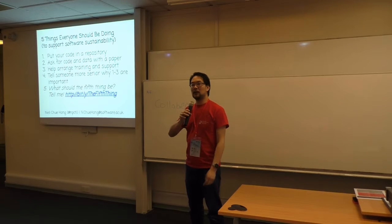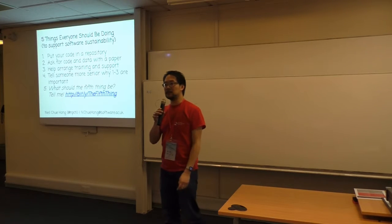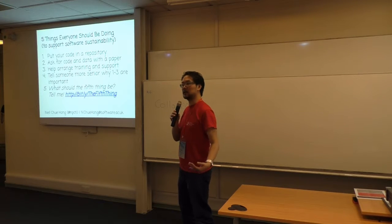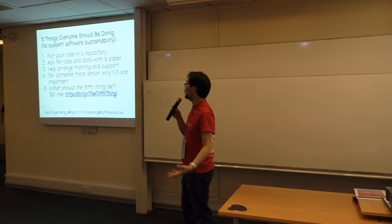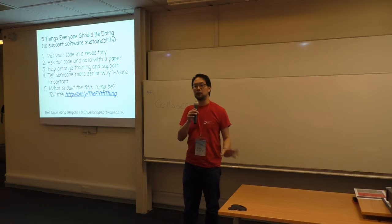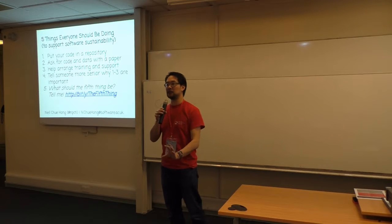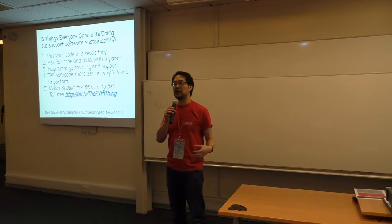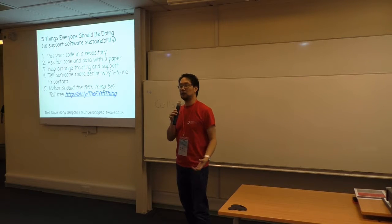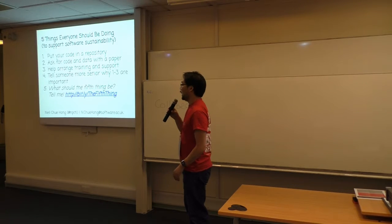I give a lot of talks around software sustainability, and one of the things that I always get asked are what are the five things that everyone should be doing right now — what can everyone aspire to to help with their work?